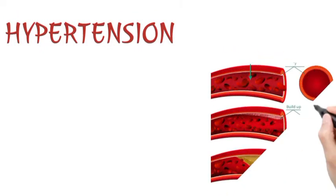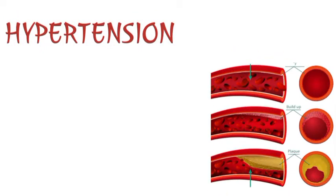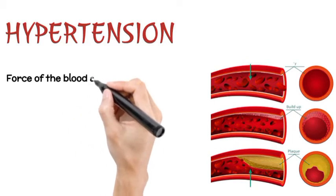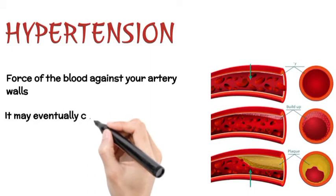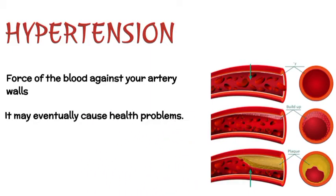Definition of Hypertension: High blood pressure, or hypertension, is a common condition in which the long-term force of the blood against your artery walls is high enough that it may eventually cause health problems such as heart disease.